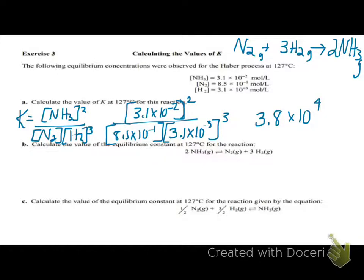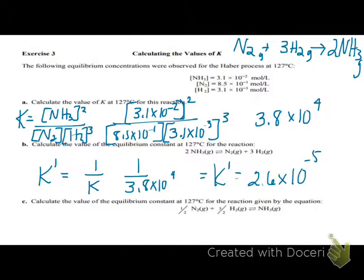So, we have 3.1 raised to the second power, divided by 8.5 times 10 to the negative 1, and then 3.1 times 10 to the negative 3, raised to the third power. And when you plug all that into your calculator, hopefully you know how to do that, at this point in your life, you should get 3.8 times 10 to the 4. There are no units on k. It's unitless. It's one of the few unitless things we have in chemistry. That is a very large k, so which direction is favored, products or reactants? Products, because it's way greater than 1. So, definitely the products would be favored.